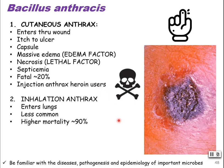The less common but way more virulent form is inhalation anthrax. That is when these spores enter the lungs and germinate, and this has a high, high mortality rate.